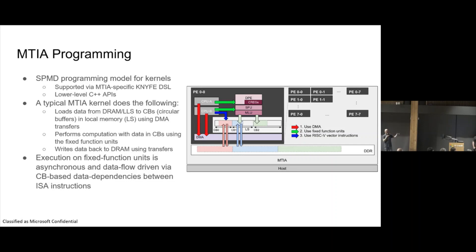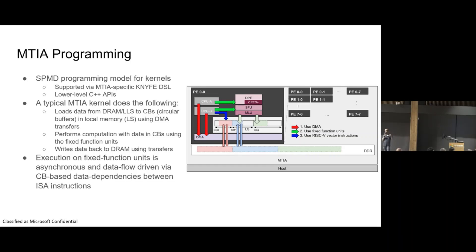On each PE, execution happens in three stages. First, load the data you want to work on into local scratch memory available on each processing element. This is different from shared memory in CUDA or Triton, where it's more of an optimization — on our accelerator, for many fixed function units, data must be present in this faster local scratch memory. Then you do the processing on fixed function units — matrix multiplier, SFU, and so on. Finally, you store it back to memory. Another key aspect: many fixed function units are programmed via extended ISA instructions, and the dependencies between computations form a data flow graph that is tracked in hardware, allowing asynchronous execution where order is maintained in hardware.